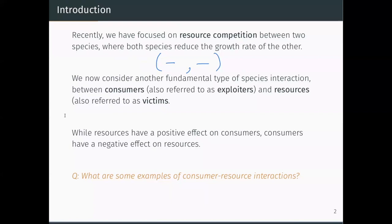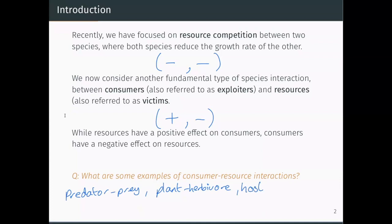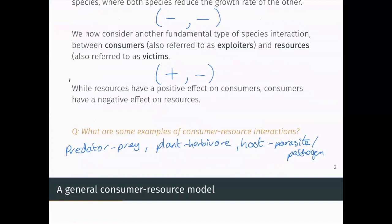Now we're going to think about consumer-resource interactions that are asymmetric, and that means that the presence of one species is beneficial to the other, and the presence of the other species is detrimental to the other. So this is also known as an exploiter-victim scenario. Essentially, while resources have a positive effect on consumers, consumers have a negative effect on resources. For example, we might have things like predator-prey models in this pattern, including plants and herbivores, plant-herbivore interactions, and also infectious disease models. So host-parasite and pathogen models also fit this paradigm, where in this case our parasite is our exploiter or our consumer, and the host is a resource.